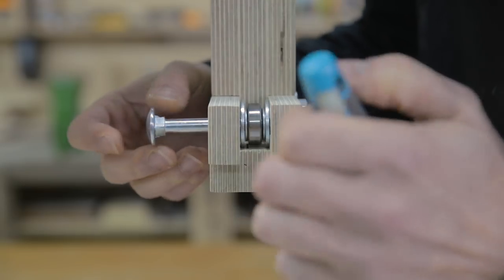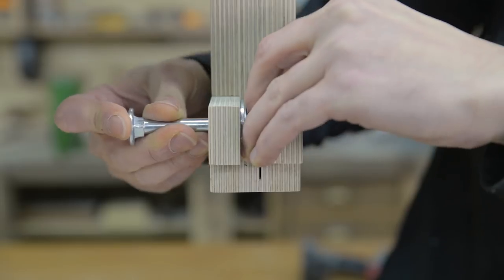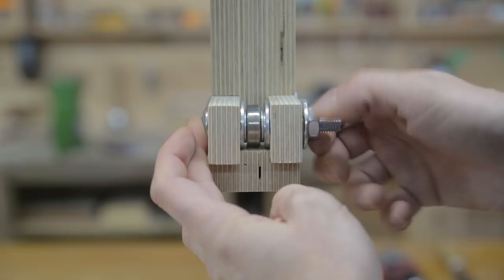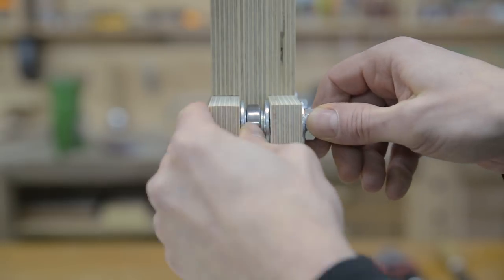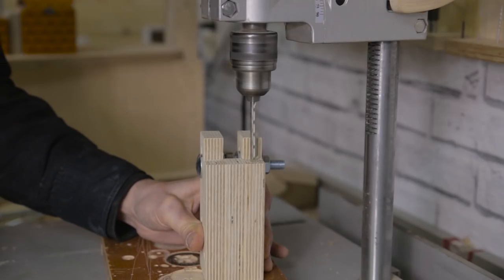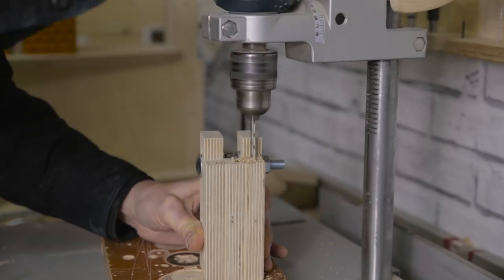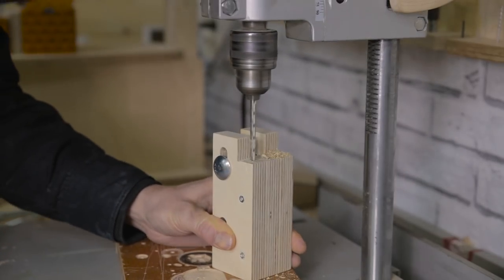I put the bearing in place and I also put in as many washers as necessary until the gap between the pieces has been filled. Now I drill holes for the parts that will act as side stops for the blade.